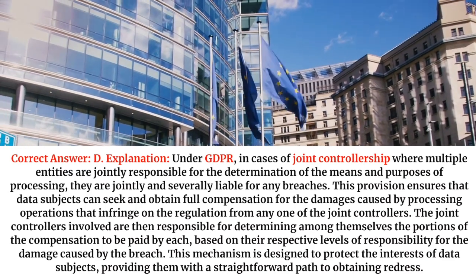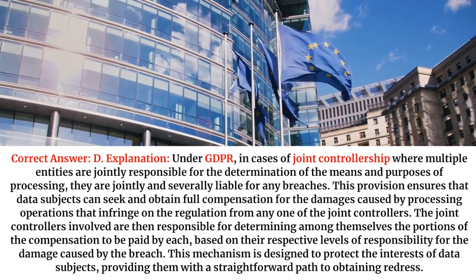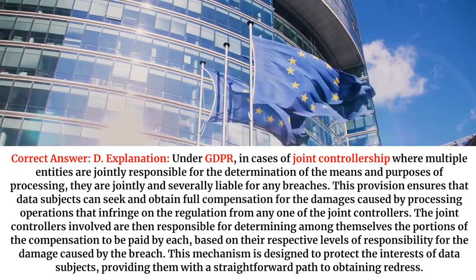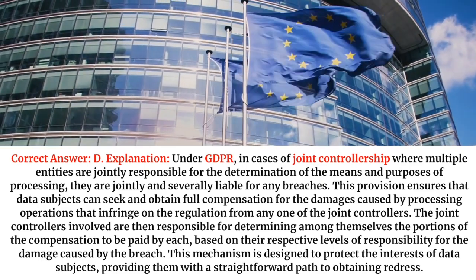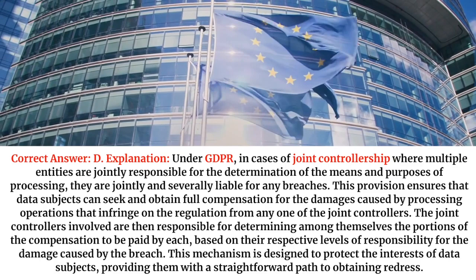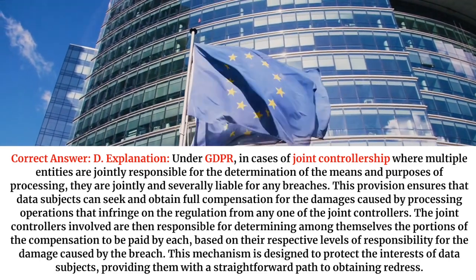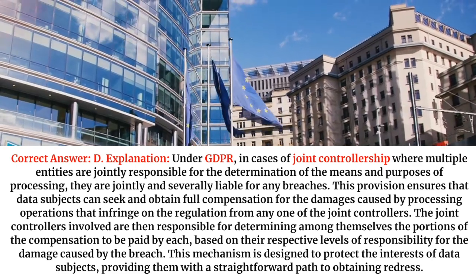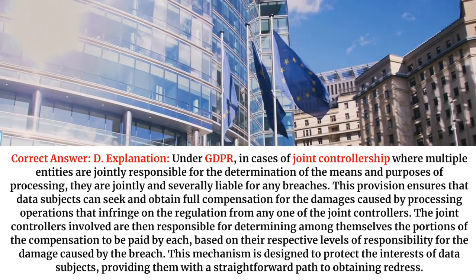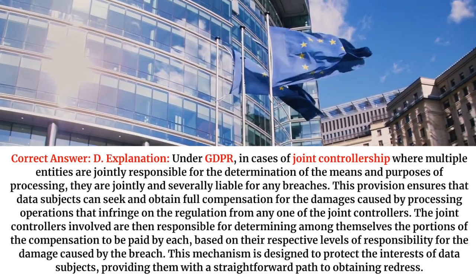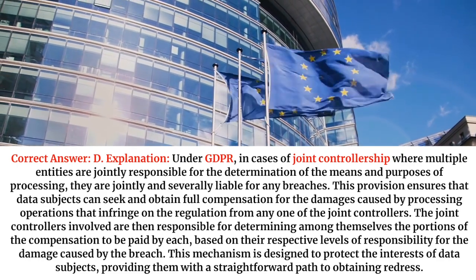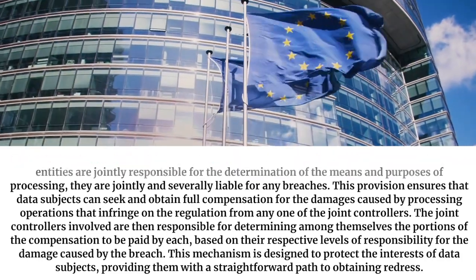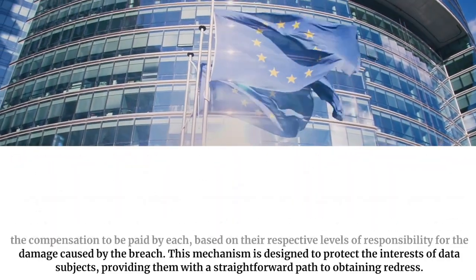Explanation. Under GDPR, in cases of joint controllership where multiple entities are jointly responsible for the determination of the means and purposes of processing, they are jointly and severally liable for any breaches. This provision ensures that data subjects can seek and obtain full compensation for the damages caused by processing operations from any one of the joint controllers. The joint controllers involved are then responsible for determining among themselves the portions of the compensation to be paid by each, based on their respective levels of responsibility.